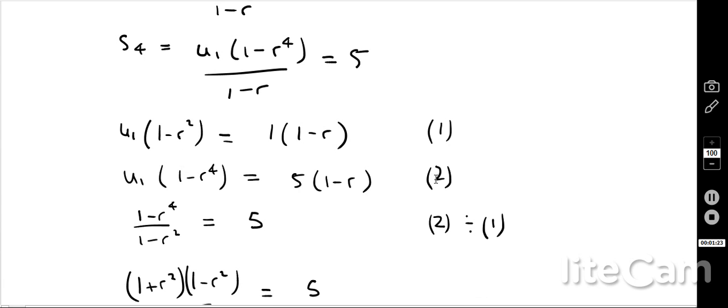Okay, and now what I can do if I notice, basically if I do equation 2, so this equation here, divided by equation 1, the u1s will cancel out. So it's a way of getting rid of the u1s.